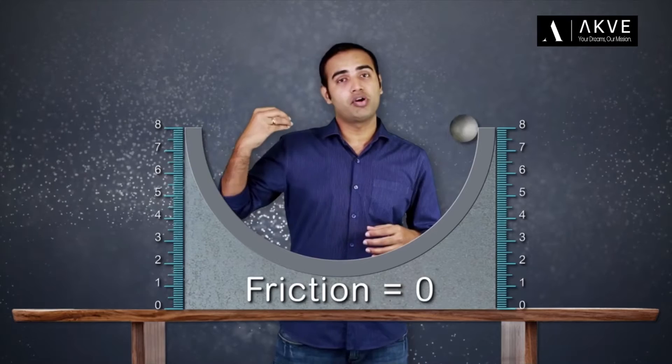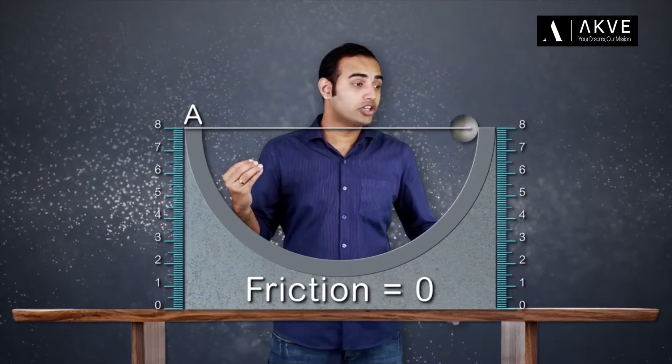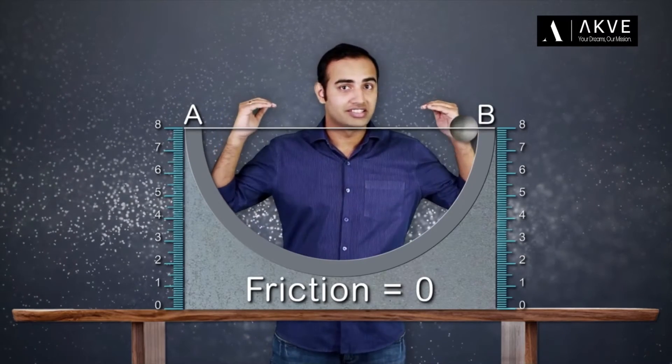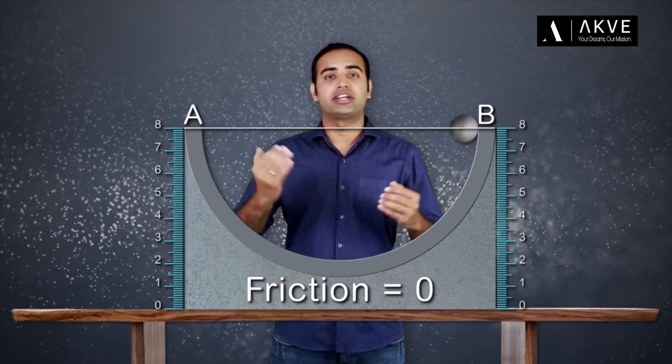In this illustration, you can see that if we release the ball from point A, it swings all the way to point B, which is at the same height from the ground as point A.